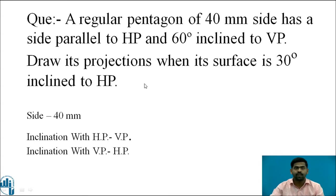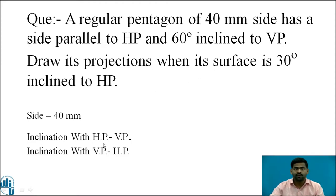Before solving the problem, read it carefully and write down the given data. A regular pentagon of 40 mm side is given. It has its side parallel to HP and 60 degrees inclined to the VP. Remember: when inclination with HP is given, we draw it in the VP, and when inclination with the VP is given, we draw it in the HP.